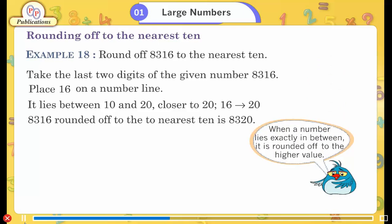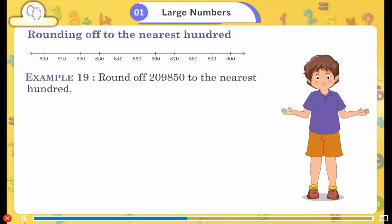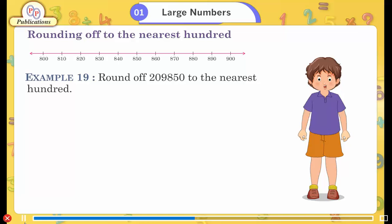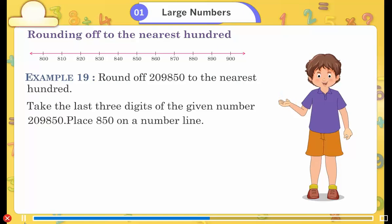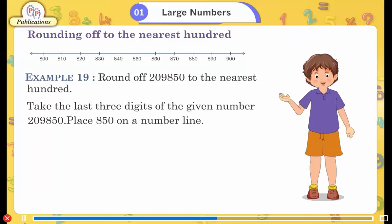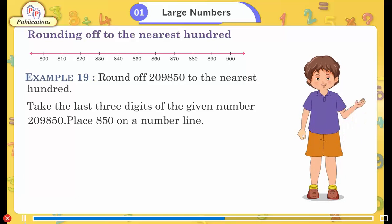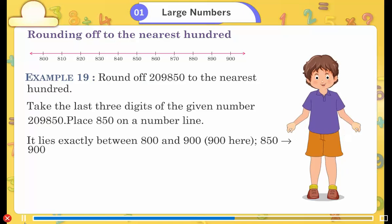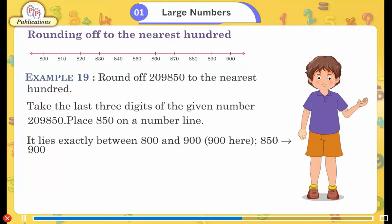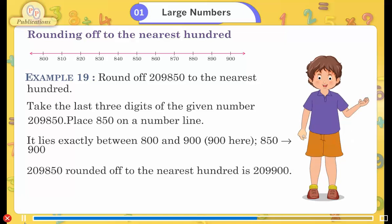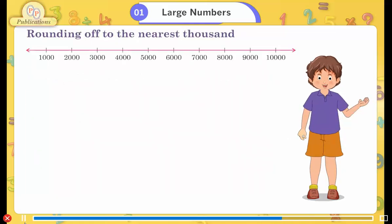When a number lies exactly in between, it is rounded off to the higher value. Rounding off to the nearest hundred. Example 19: Round off two lakh nine thousand eight hundred fifty to the nearest hundred. Take the last three digits: 850. Place 850 on a number line — it lies exactly between 800 and 900. Since 850 is exactly in between, it rounds up to 900. Therefore, two lakh nine thousand eight hundred fifty rounded off to the nearest hundred is two lakh nine thousand nine hundred.